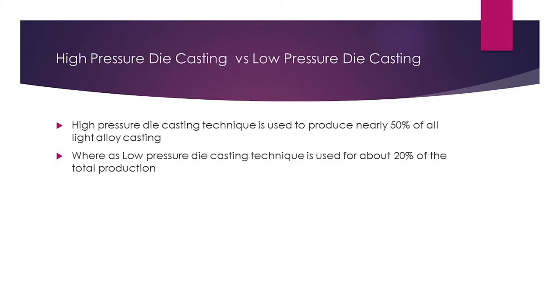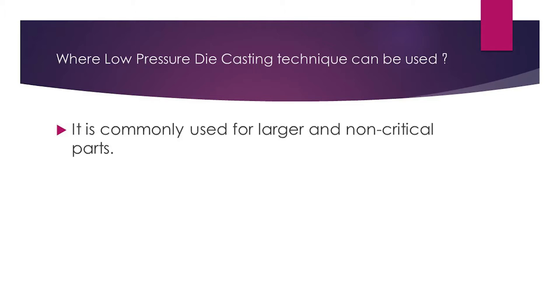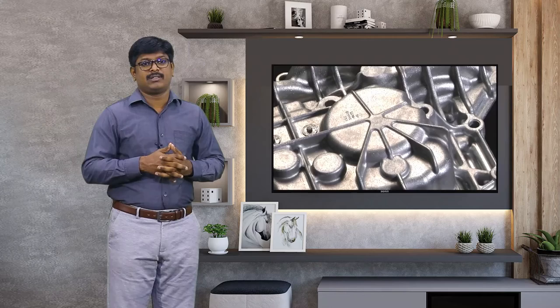High pressure die casting has wider applications — nearly 50% of all light alloy casting productions. Low pressure die casting currently accounts for about 20% of total production, but its usage is increasing day by day. High pressure castings are used where tight tolerance and detailed geometry are required, while low pressure die casting is commonly used for larger and non-critical parts.